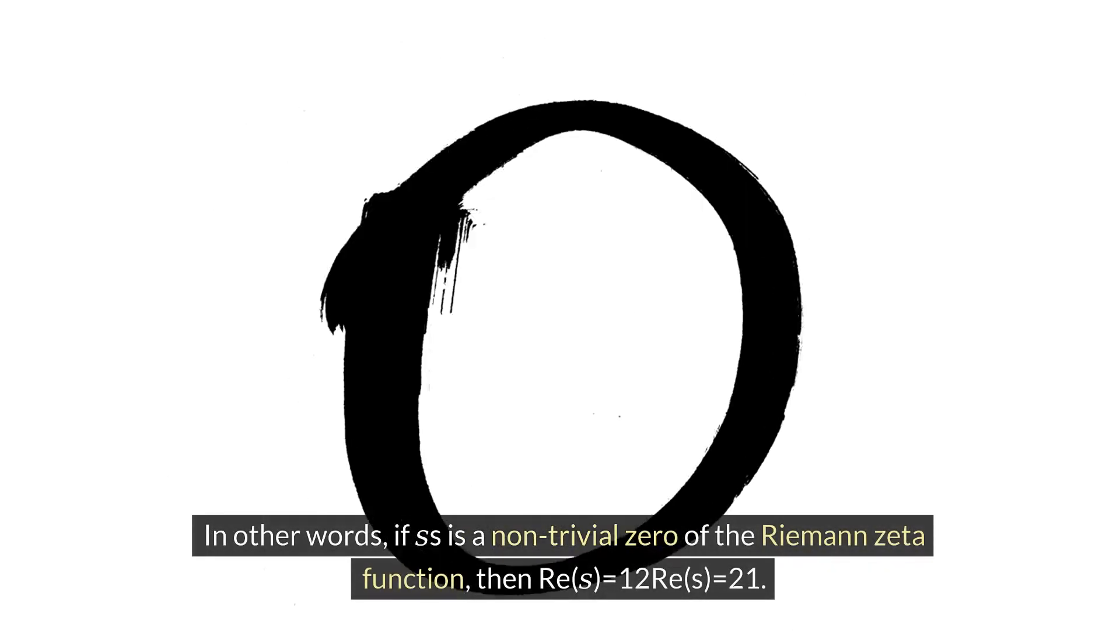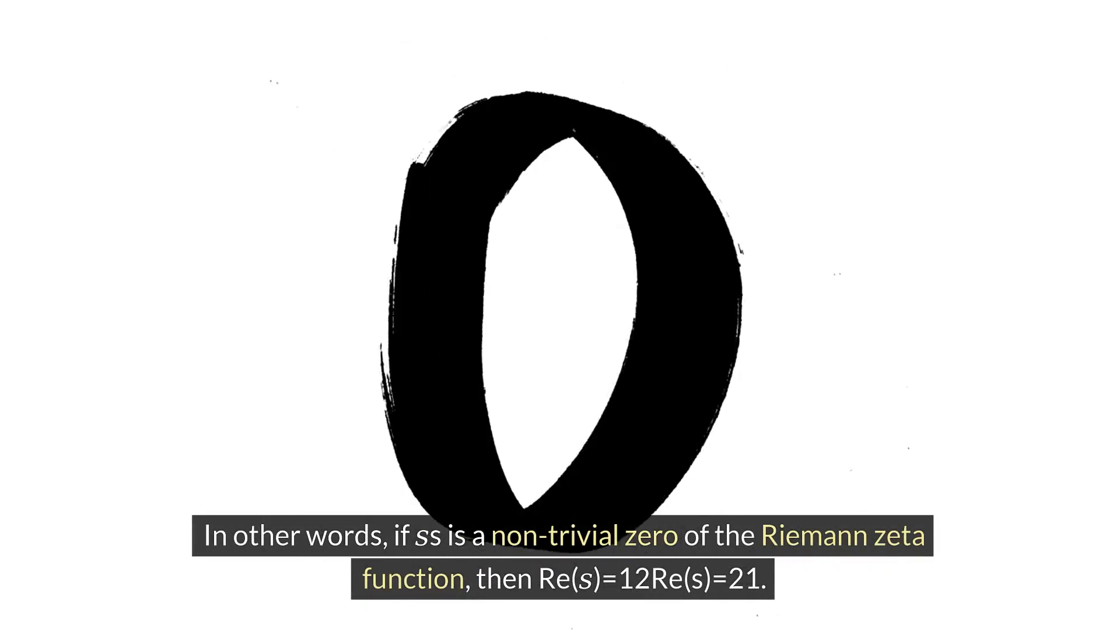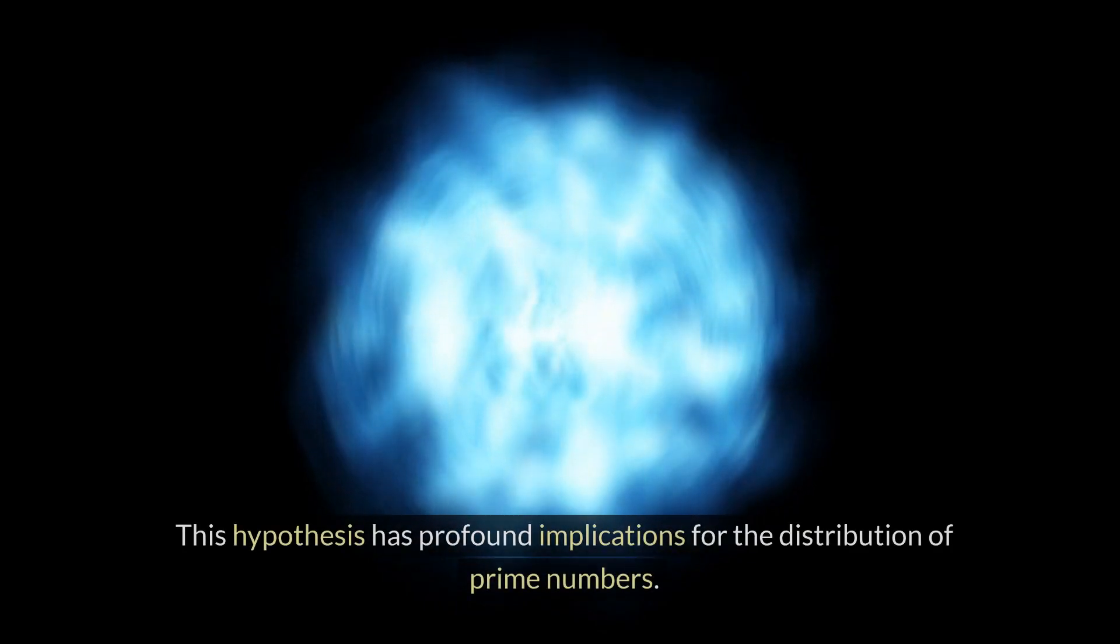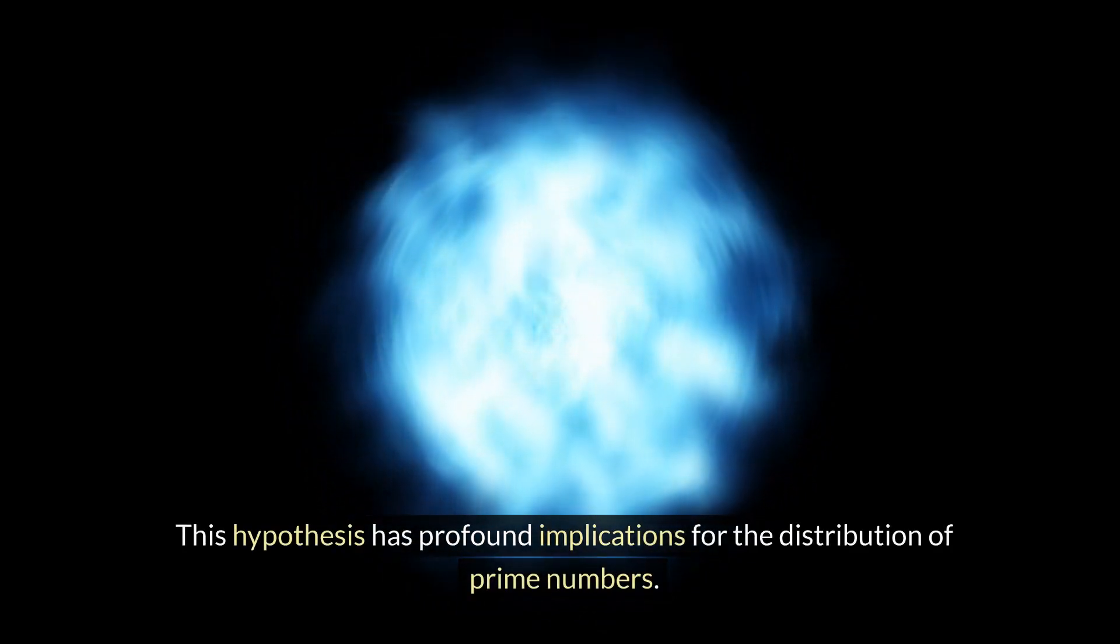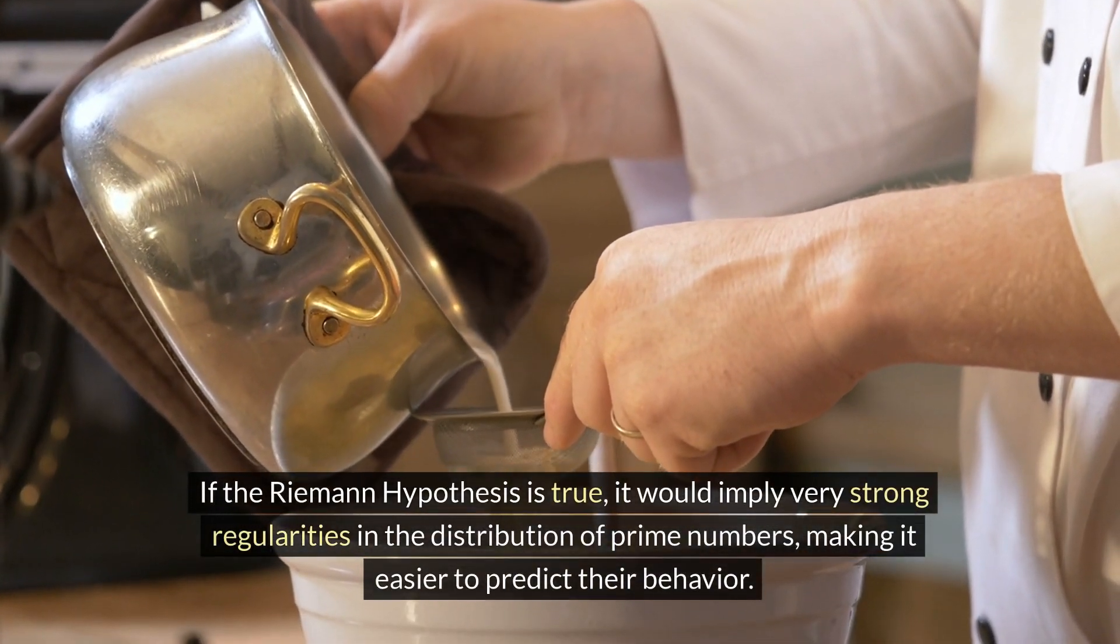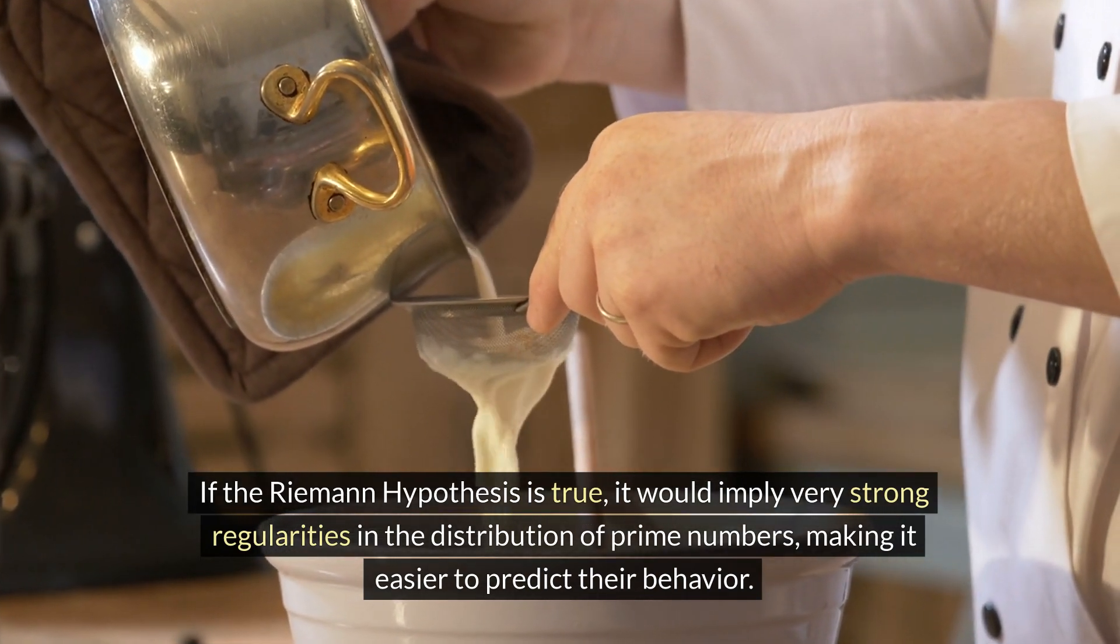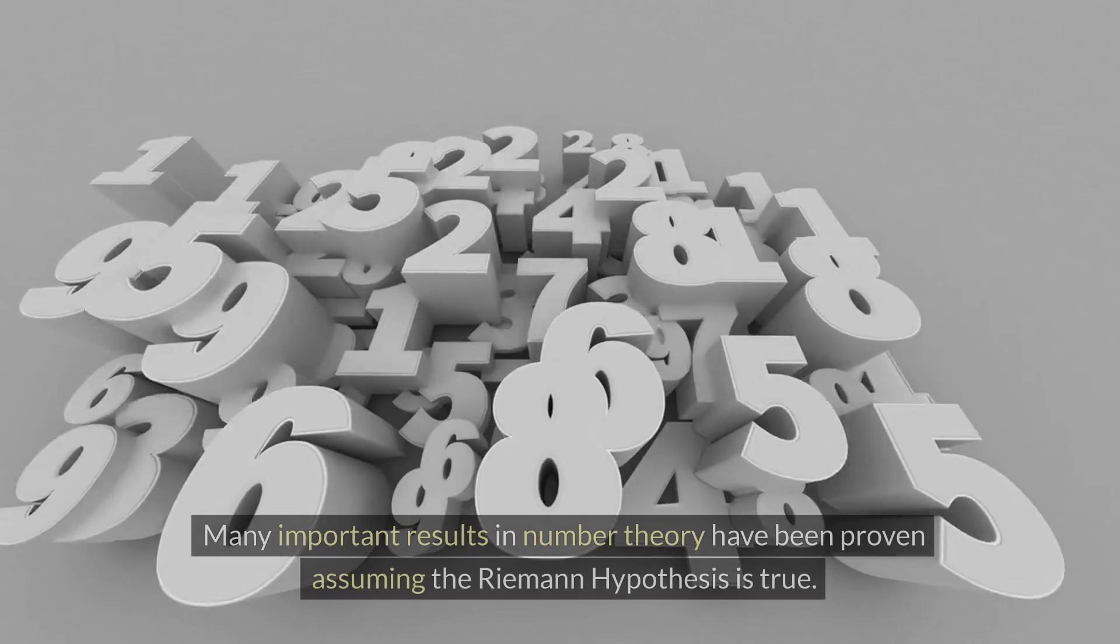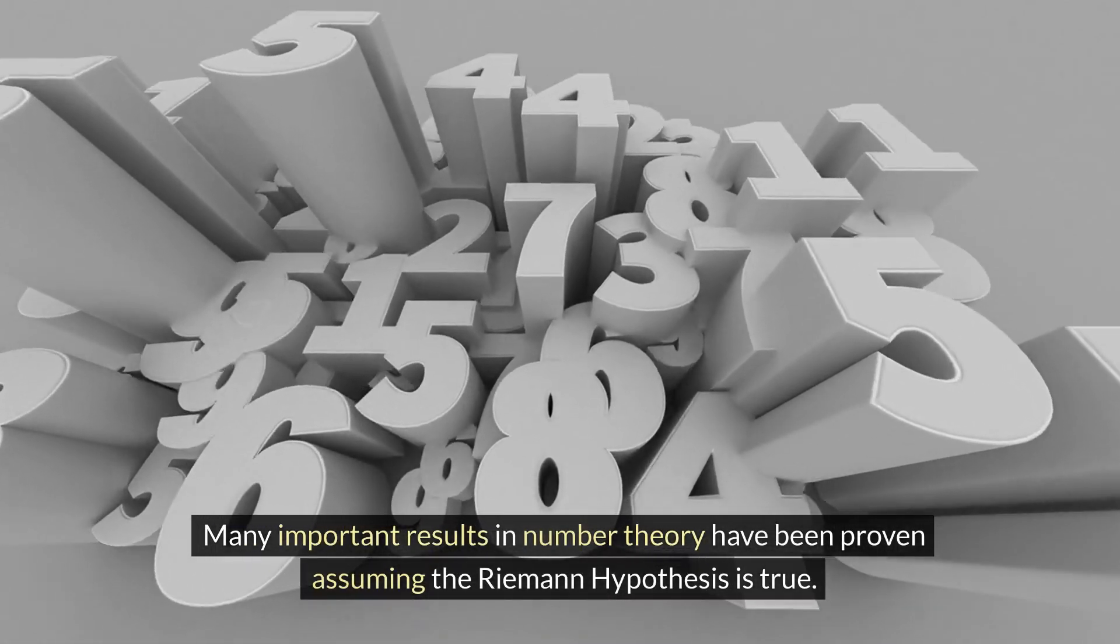In other words, if s is a non-trivial zero of the Riemann zeta function, then Re(s) = 1/2. This hypothesis has profound implications for the distribution of prime numbers. If the Riemann hypothesis is true, it would imply very strong regularities in the distribution of prime numbers, making it easier to predict their behavior. Many important results in number theory have been proven assuming the Riemann hypothesis is true.